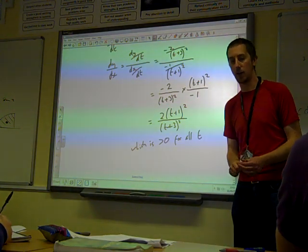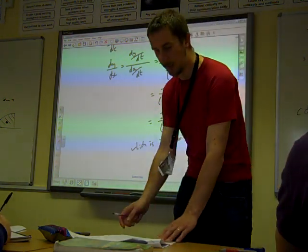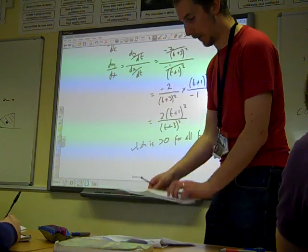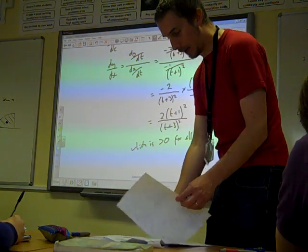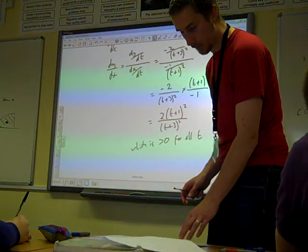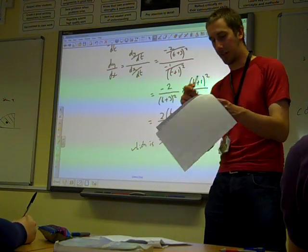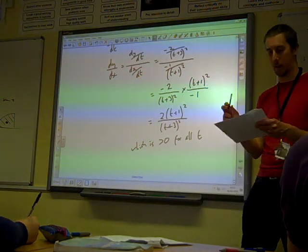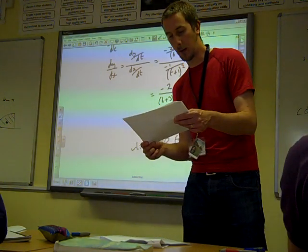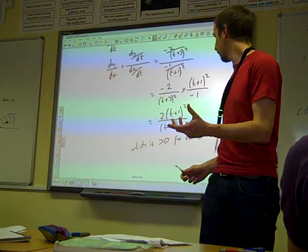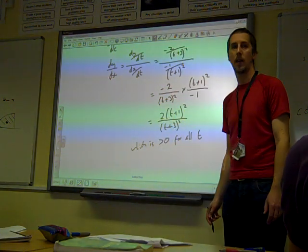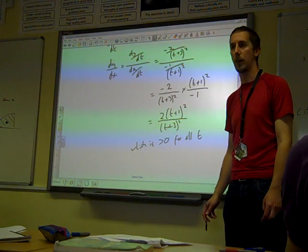So that is greater than 0 for all the values of t. And we're happy that that is enough to bear. The Mark Scheme wanted you just to state that it is positive, state that the squares are positive. Make some comment about how this is definitely going to be positive for all votes.